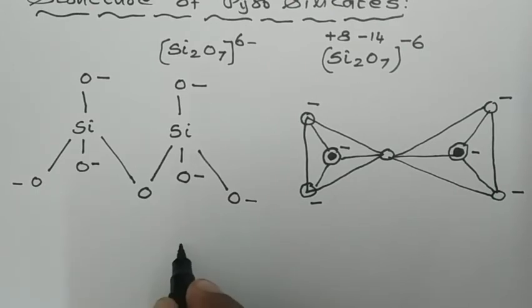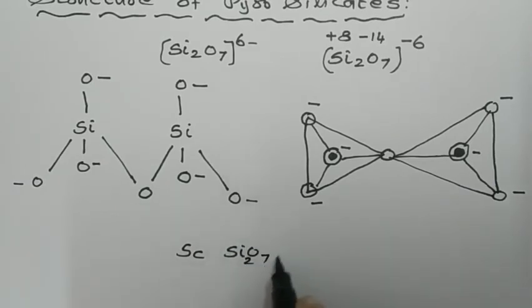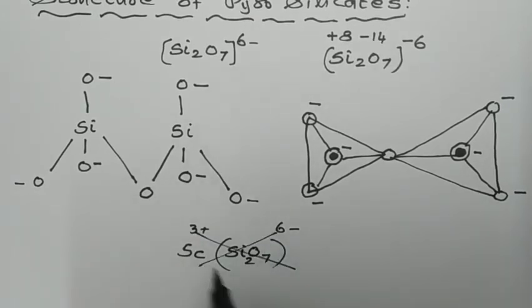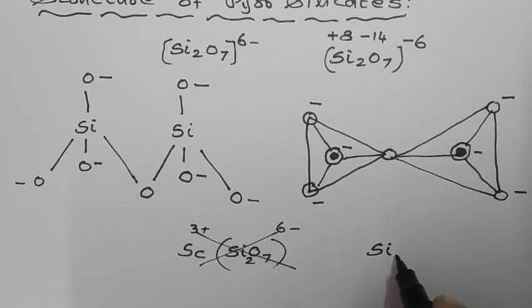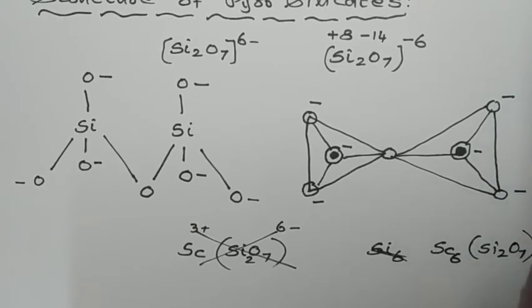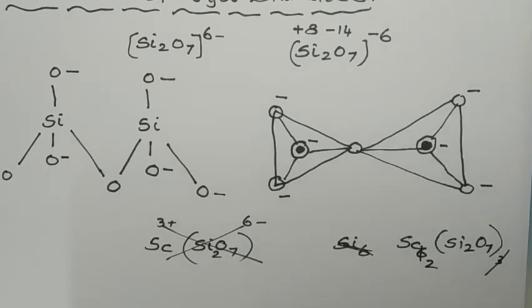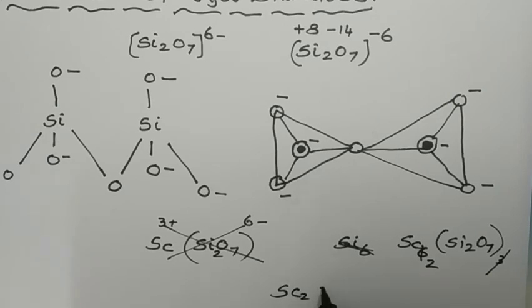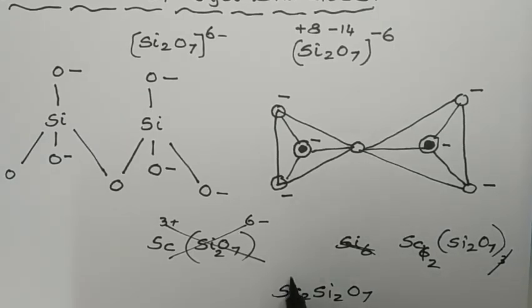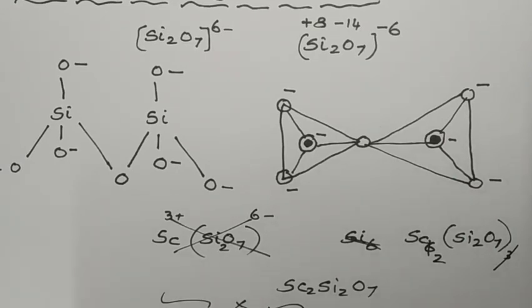To balance Si₂O₇⁶⁻, we add scandium. Scandium (Sc) with Si₂O₇: the oxidation state of Si₂O₇ is 6 minus and scandium is 3 plus. By crossing their valencies, we get Sc₂(Si₂O₇)₃. For the general molecular formula of thortveitite: 1 scandium at 3+ gives 2 scandium at 6+, and 6+ ions are neutralized by 6⁻ ions. This is your structure of pyrosilicate or sorosilicate.